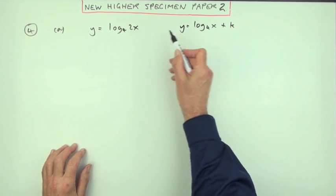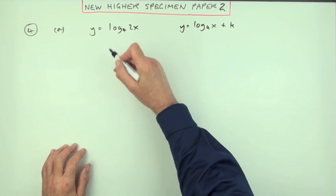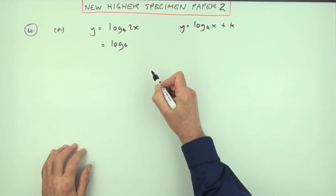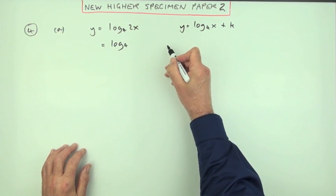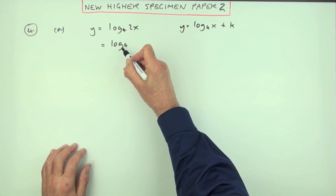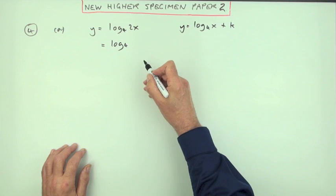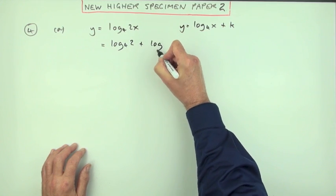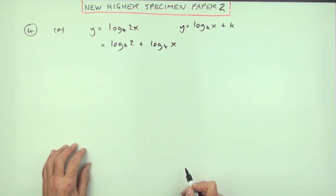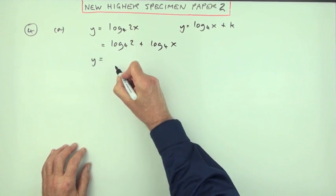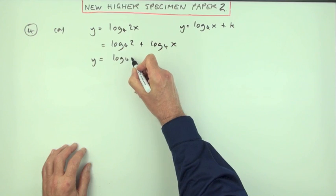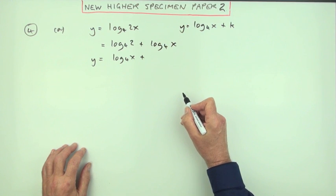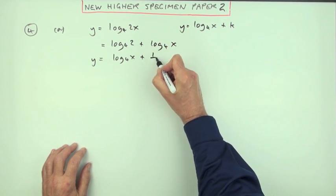Well, the obvious thing is if I just want the x and that 2 is going somewhere, there's a law of logs you can use. When you add logarithms they produce a single logarithm of the product. So you could split that part into log base 4 of 2 plus log base 4 of x.